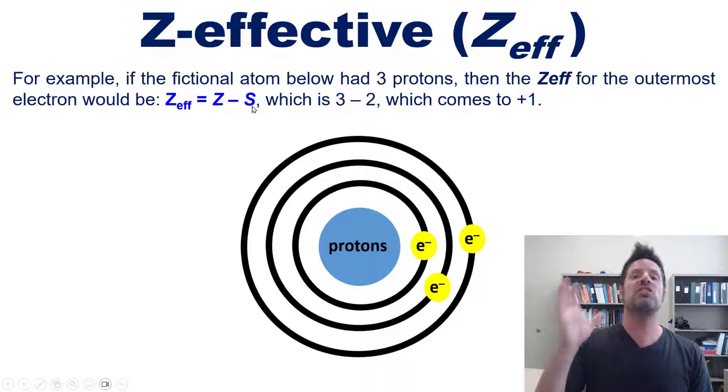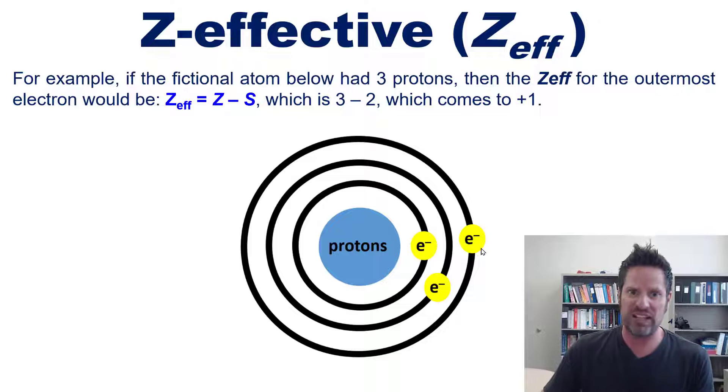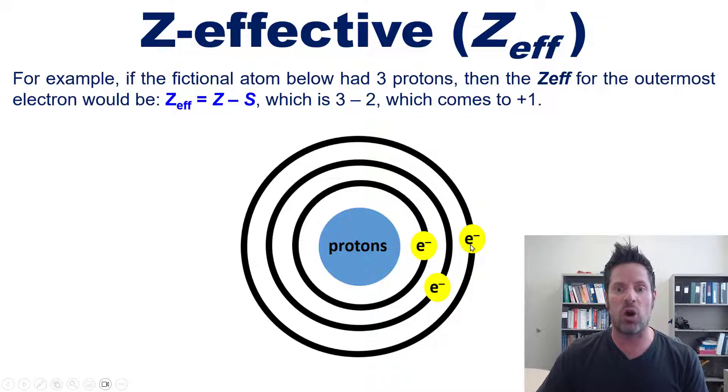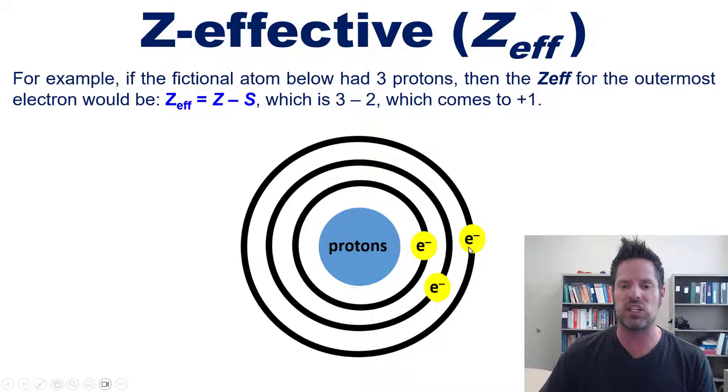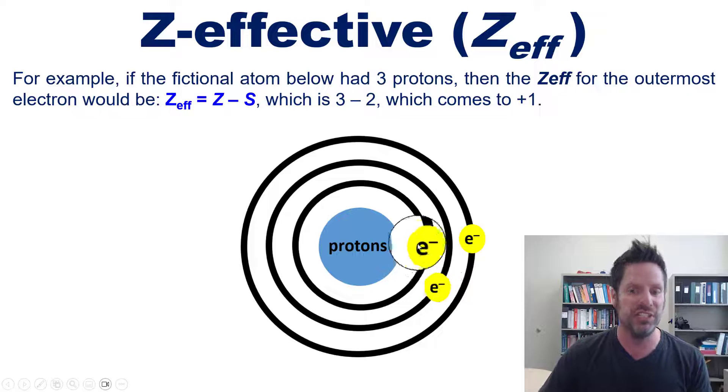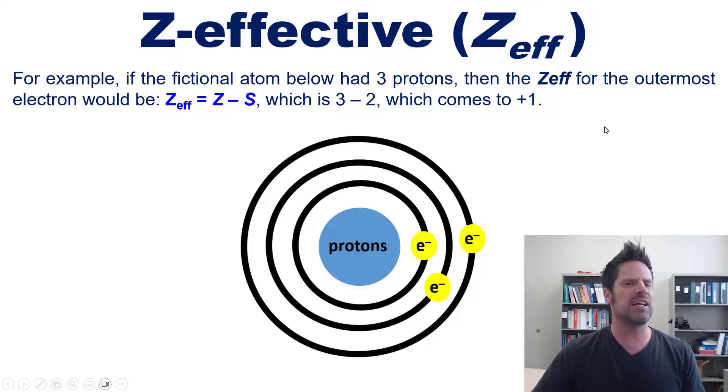S is the total number of all electrons between the nucleus and the outermost electron whose Z-effective we're calculating. For example, if this fictional atom has three protons, how many total electrons are in lower energy levels? In this case there are two, so S equals two. Thus the Z-effective is three minus two, which equals positive one.